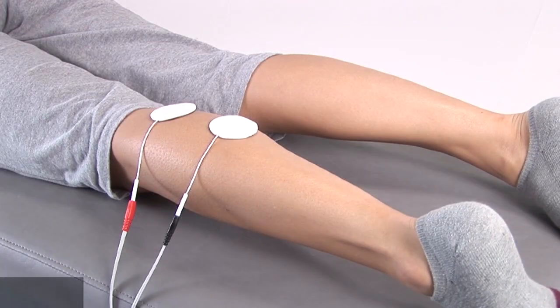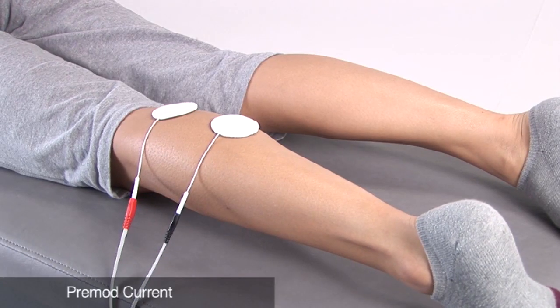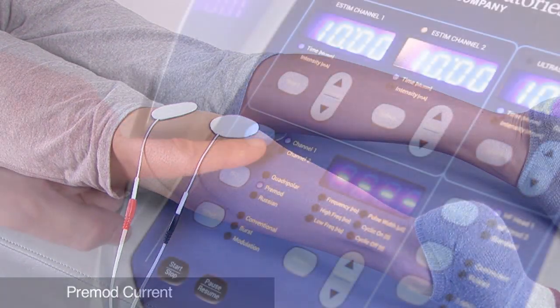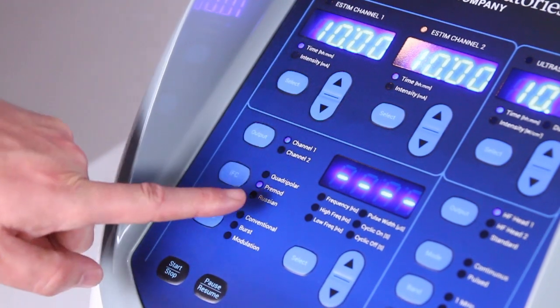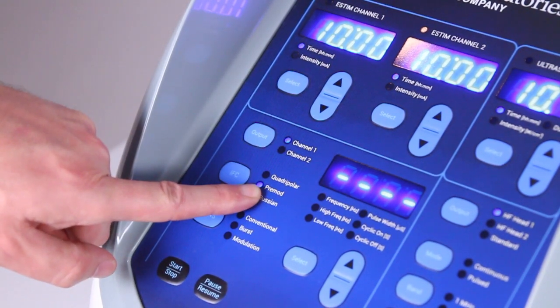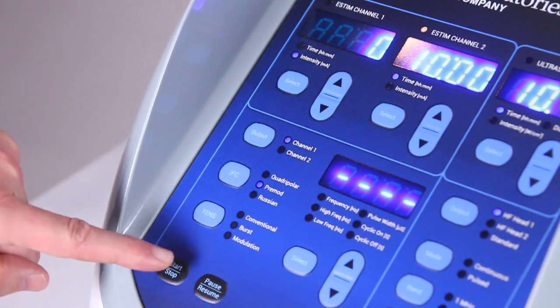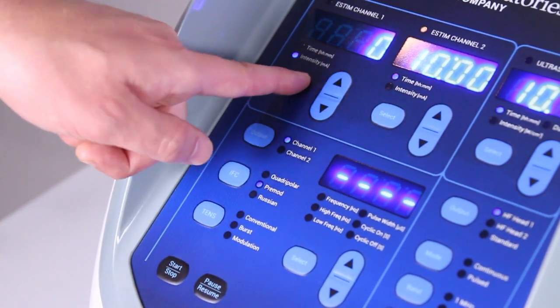To use pre mod treatment for a smaller area, position two electrodes on your patient and select channel one and pre mod. Start the treatment and set the time and intensity using the up and down arrows.